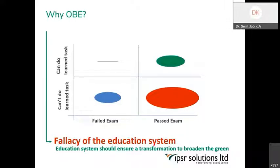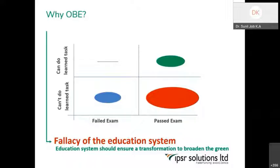Outcome-based education is an approach where we are adding a new axis. The traditional system of education is more academically poised, and outcome-based education focuses both on academical knowledge as well as their ability — their competencies to fit into the life space, into the society, into different industrial environments. Outcome-based education is adding an additional axis apart from a merely academical inclination into competency-based education.